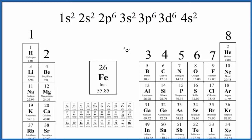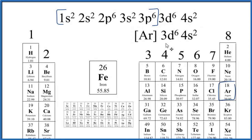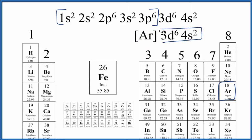We can write this in condensed notation. We find the noble gas before iron — iron is element 26, so it would be argon. We put brackets around the electron configuration for argon and just write [Ar]. So the condensed notation for iron is [Ar] 3d6 4s2. To find the valence electrons, we're looking for the electrons outside of the noble gas core. We have 3d6 and 4s2 — add these up, 6 plus 2 — iron has 8 valence electrons.